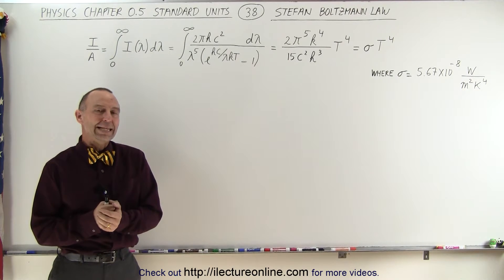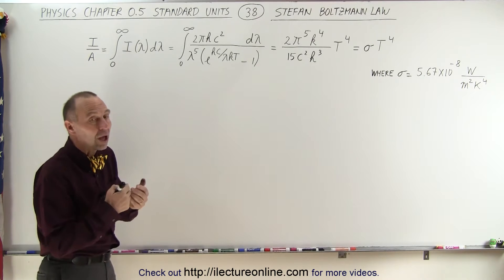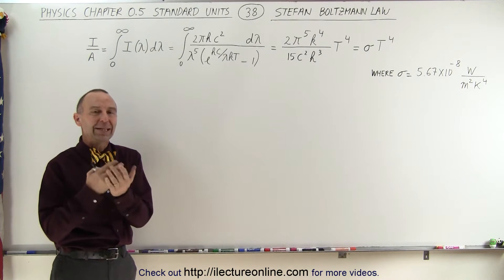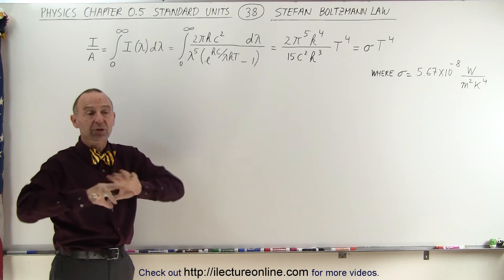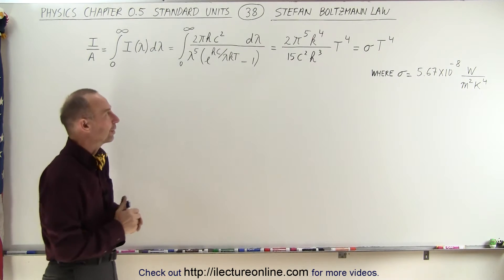Welcome to ElectronLine. Here we're going to talk about the Stefan-Boltzmann law. It is the law that explains how we calculate the radiation coming from an object, the total radiation of an object based upon its temperature and its surface area.